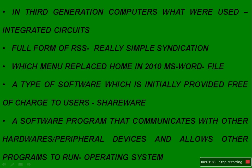VLSI is Very Large Scale Integration, and there was also ULSI — Ultra Large Scale Integration. The answer was integrated circuits, used in third-generation computers. In first generation they used vacuum tubes; in second generation, transistors. Very important for future exams as well. The full form of RSS is Really Simple Syndication.